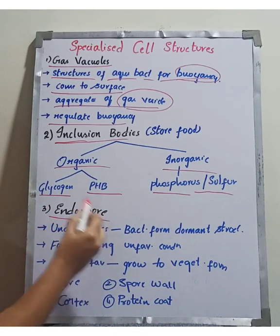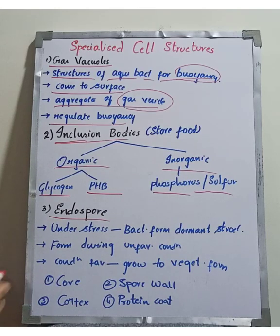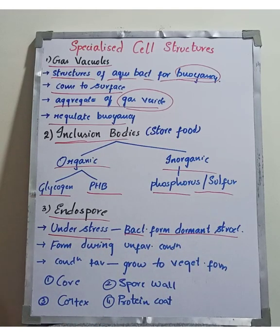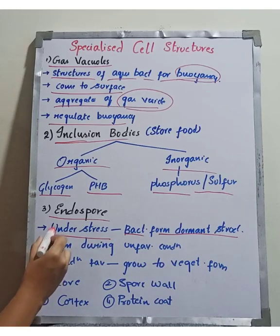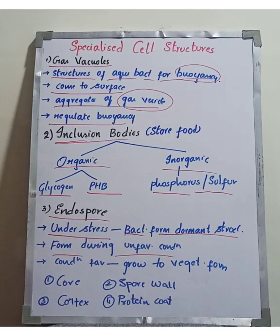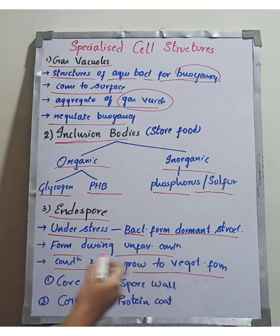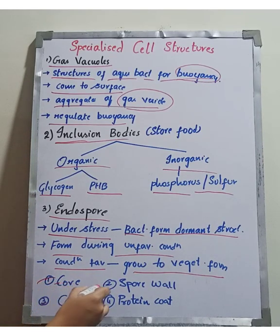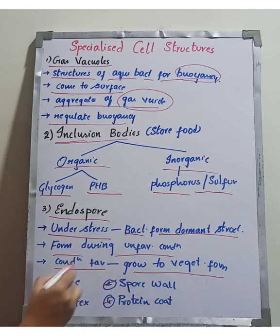The third special structure is the endospore. Endospores are formed by bacteria under stress conditions. When conditions become unfavorable, bacteria enter a dormant stage by forming endospores. When conditions become favorable again, they return to the vegetative form. The endospore has four parts: the core, spore valve, cortex, and protein coat.